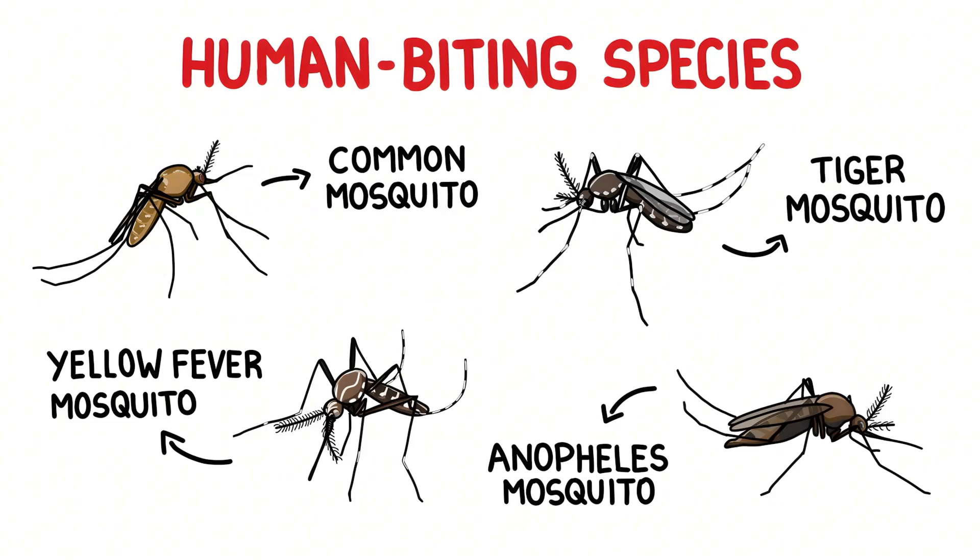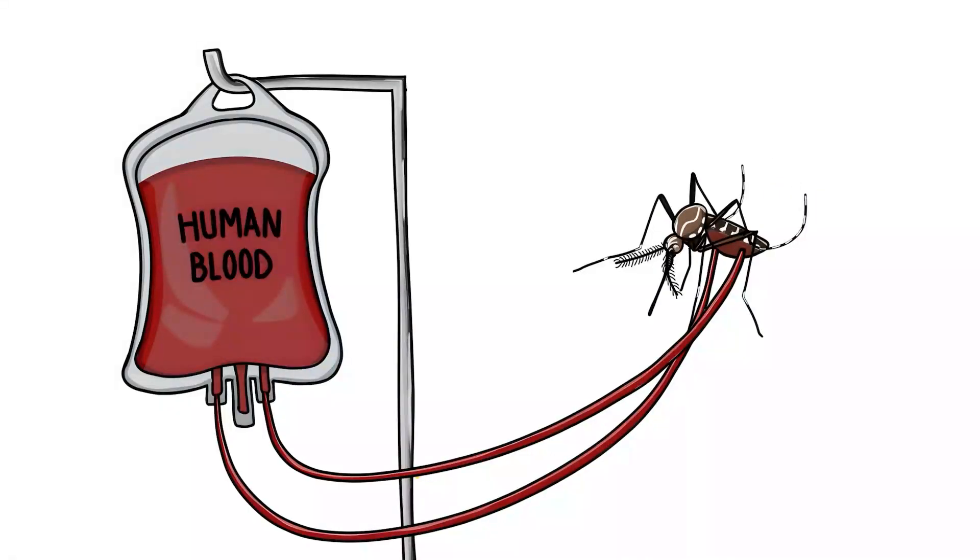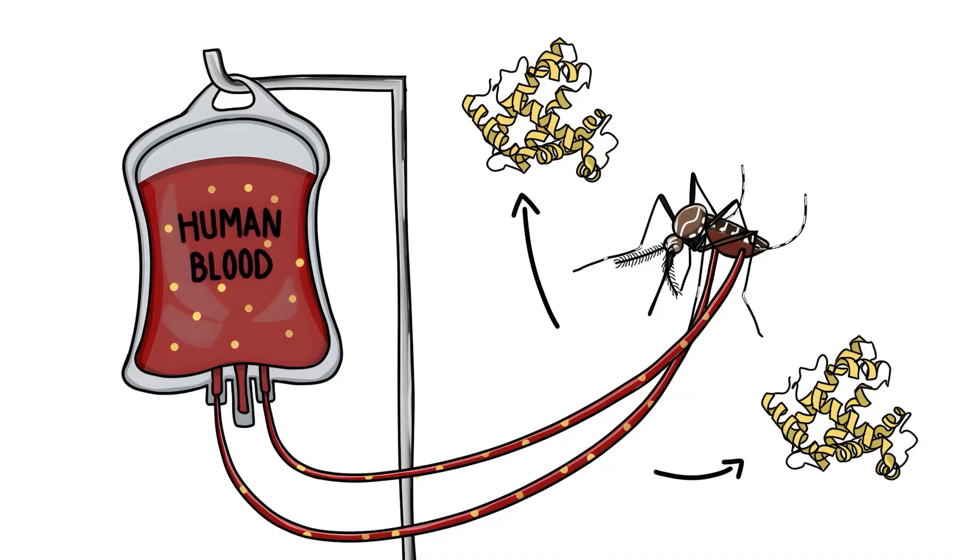And even among the human-biting species, only the females bite. This is because they need human blood, or more precisely, certain proteins in it, in order to produce eggs.